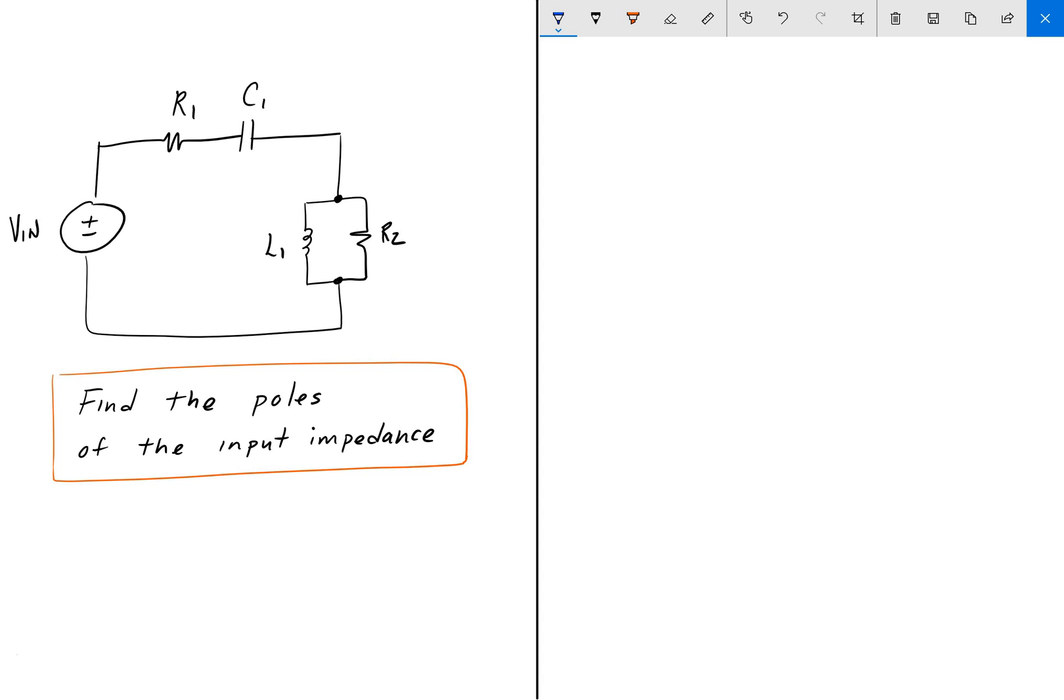And so to find Zin, that's going to be R1 plus the impedance of the capacitor, we'll call it Zc1, plus the parallel combination of L1 and R2. So that's going to be Zl1 in parallel with R2.